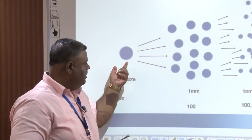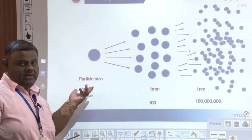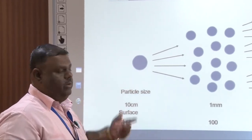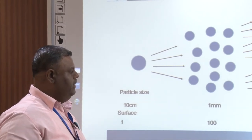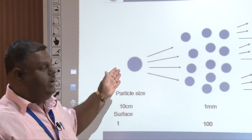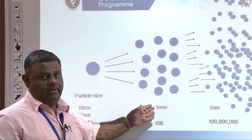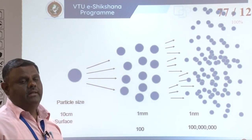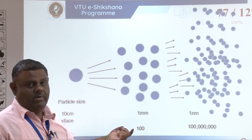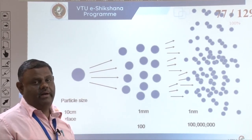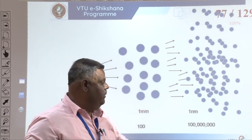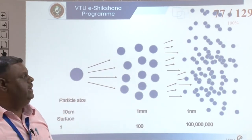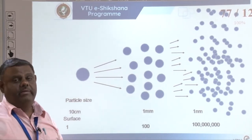To explain further: suppose you have a particle with 10 cm surface area. If you divide it into one-millimeter sized particles, you arrive at around 100 smaller particles. If you further reduce those 100 particles to one-nanometer sized ones, you arrive at one billion nanoparticles. Thus, the surface area becomes very, very large. As you divide the material further, properties associated with it also drastically change — particularly its response toward radiation.